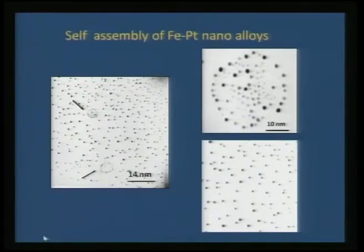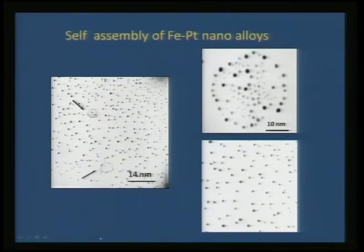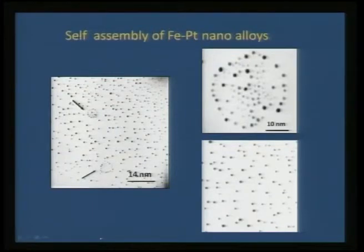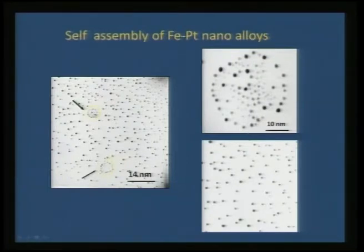From the TEM view graph, almost all iron-platinum particles are mono-sized and of the order of 1 to 3 nanometers. Usually when nano-phase alloys are generated, agglomeration occurs and stabilizing agents or surfactants are required. But here, even without surfactants, such alloys can be clearly isolated. A fascinating feature is that throughout TEM samples, a self-assembled pattern of iron-platinum alloys is consistently observed with almost mono-sized particles.